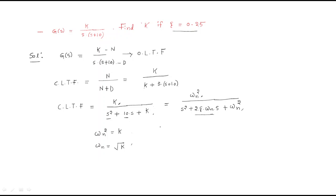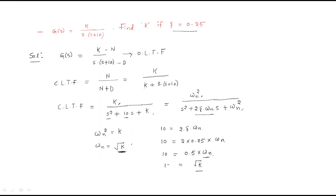Looking at the s-term, 10 is nothing but 2ζωn. So 10 = 2ζωn. The given zeta value is 0.25. Substituting: 10 = 2 × 0.25 × ωn = 0.5·ωn. We also know that ωn = √K, so substituting: 10 / 0.5 = 20 times, giving √K = 20.